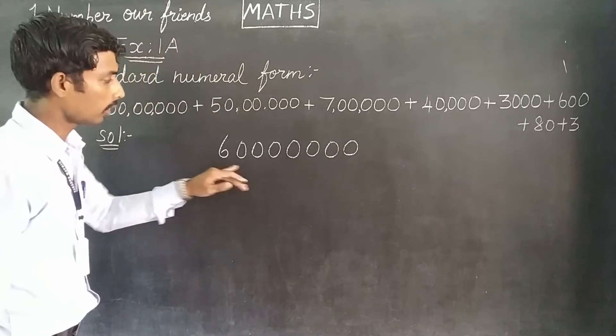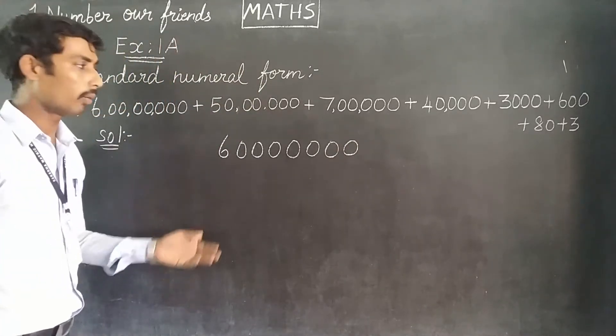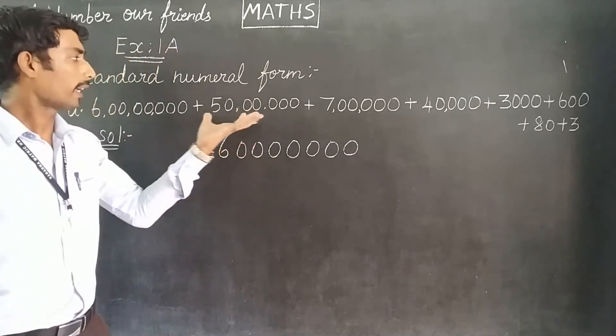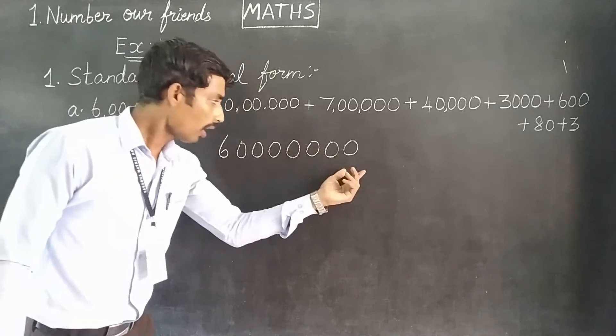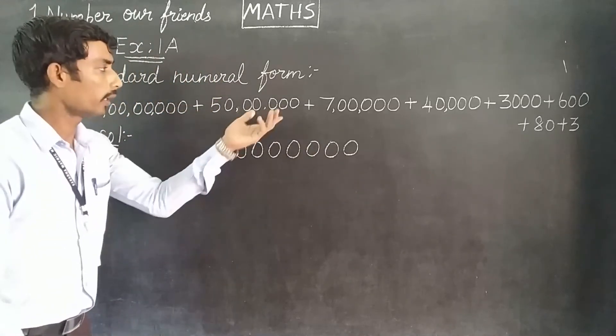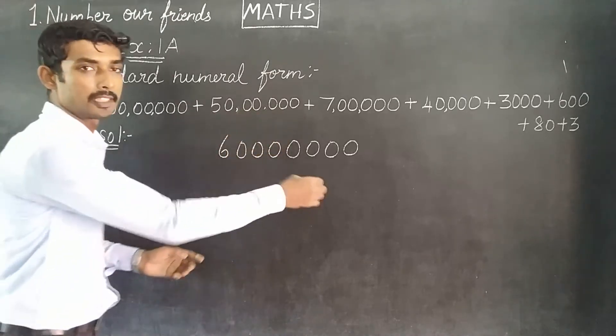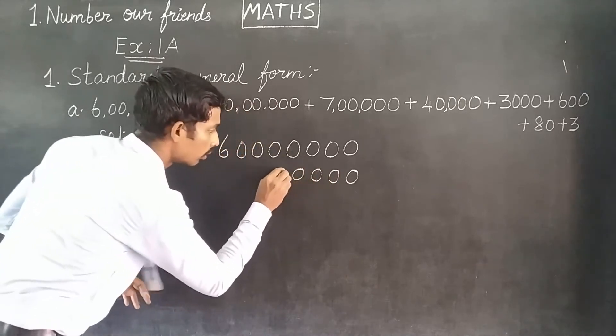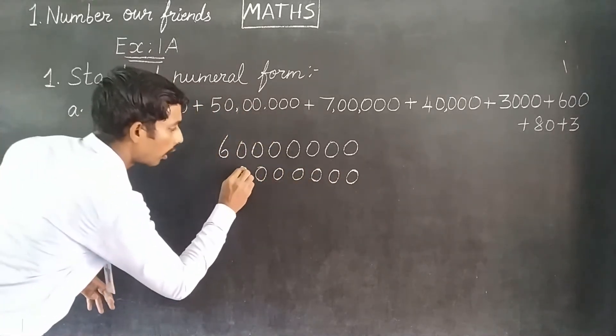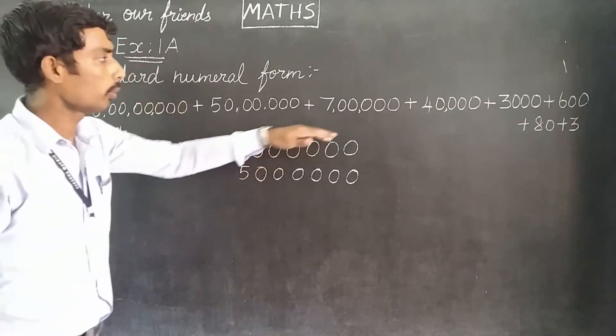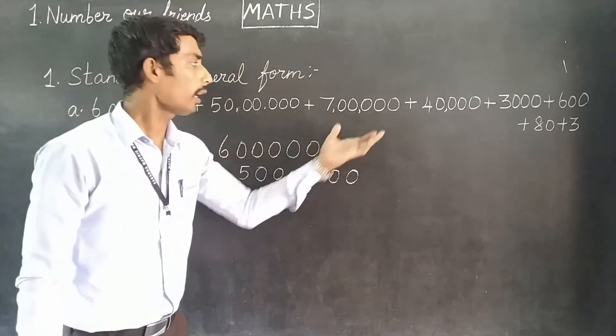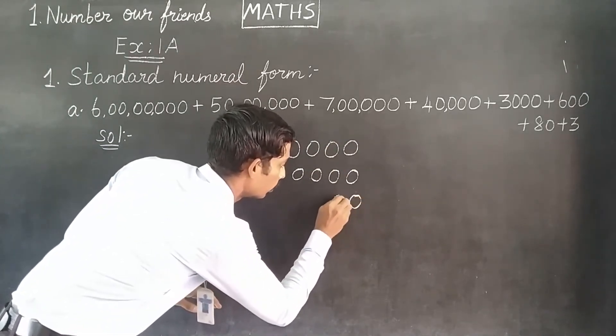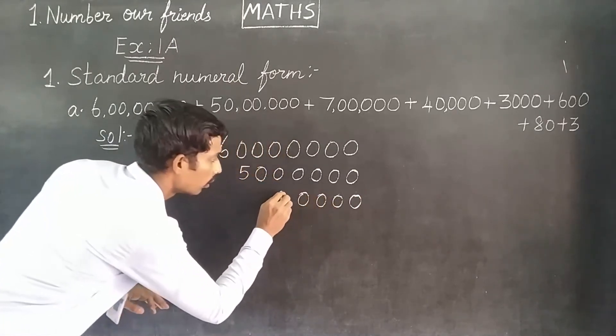So we get 6 crore, 57 lakh. If we add 3, we get 6, 57, 43, 683. This is the problem - your answer is 65743683. So you got this step number format.